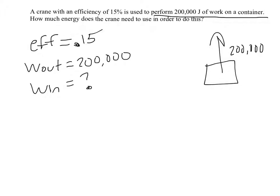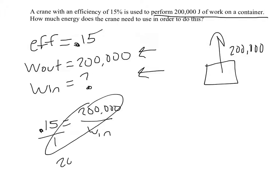So the crane's 15% efficient. What we need to know is how much work needs to go in. And here's the thing. If we want to get this much work out, we need to put more work in. We can do this the algebraic way for sure. 0.15 equals 200,000 over the work in. If you followed my advice earlier, we'll cross multiply. So 200,000 times 1 is 200,000. 0.15 times work in is 0.15 work in. Then to solve for work in, we divide by 0.15 on each side.